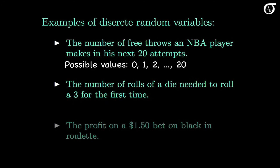How about the number of die rolls needed to get a 3 for the first time? We could get the first 3 on the first roll, or on the second roll, or on the third roll, etc. There is no upper bound. This random variable can take on any whole number value that is at least 1 — there are an infinite number of possible values. We call this a countably infinite number of possible values, so the number of rolls required to get the first 3 is a discrete random variable.